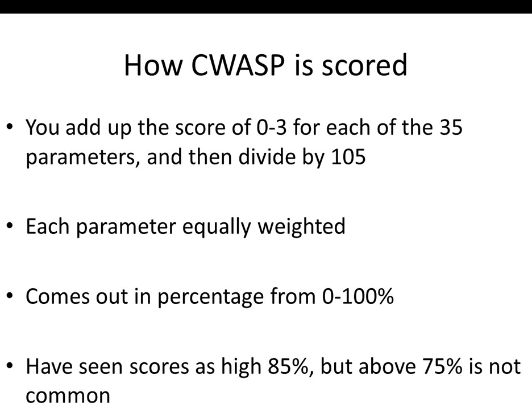You take all 35 parameters, add up the score between 0 and 3 for each, and divide by 105, so it comes out as a percentage from 0 to 100. Each parameter is equally weighted. We've seen scores as high as 85 — there were 85s in Kansas and Oklahoma for a recent outbreak. Seeing 75% or higher is not particularly common and should get your attention.